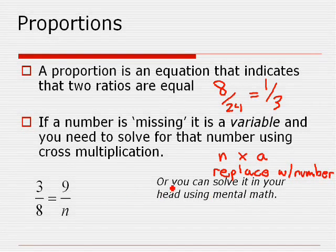First off, mental math-wise, say we have 3 over 8 equals 9 over n. Well, how would I get from 3 to 9? Well, 3 times 3 is equal to 9, so I can do the same to my bottom. 3 times 8 is 24, so that means that n will equal 24.